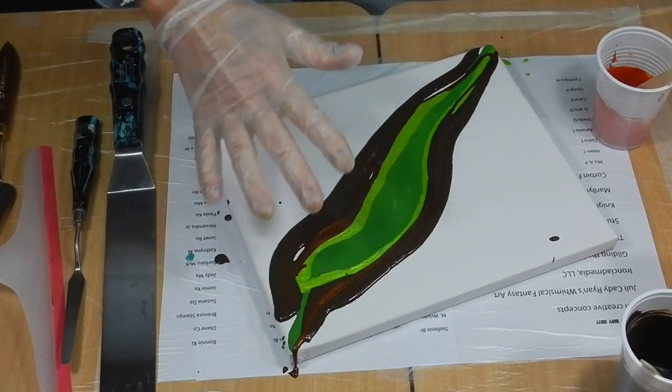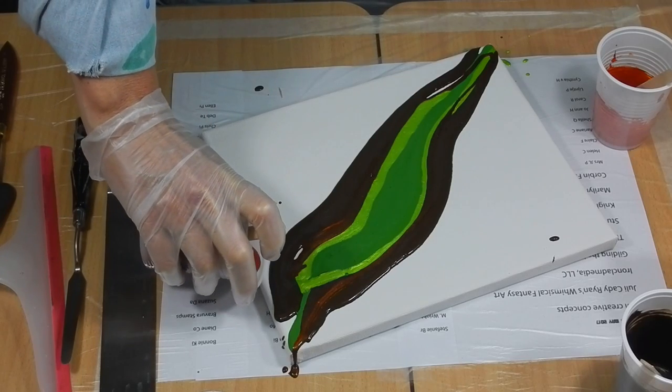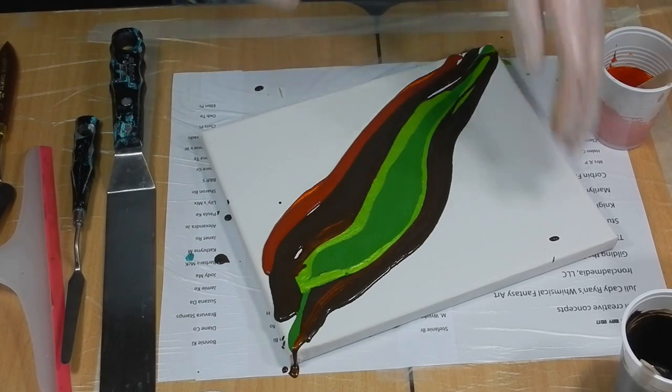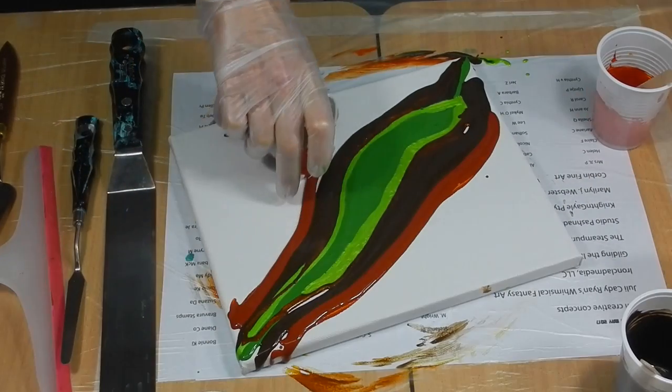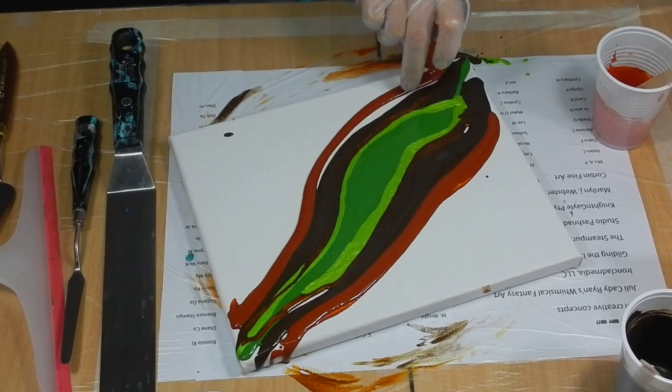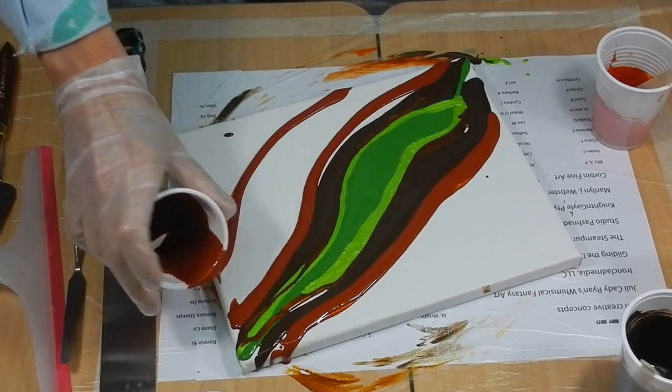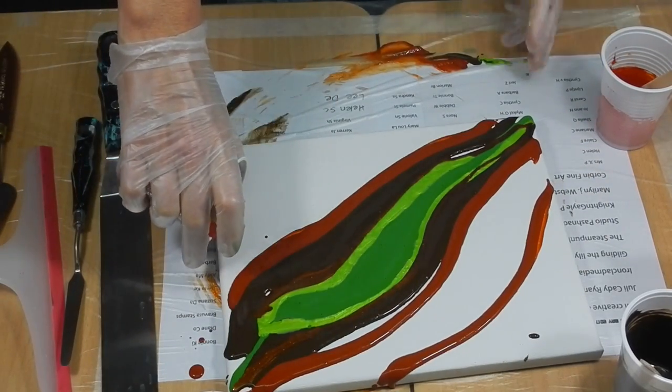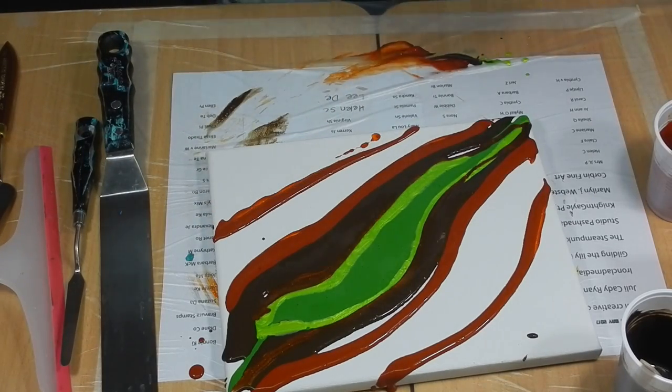I don't think you've ever seen me do one of these. Is that right? Yeah I think so. So then we're going to come in with another color brown which I really like, burnt sienna. Turn it around again and let the color come back again like that.